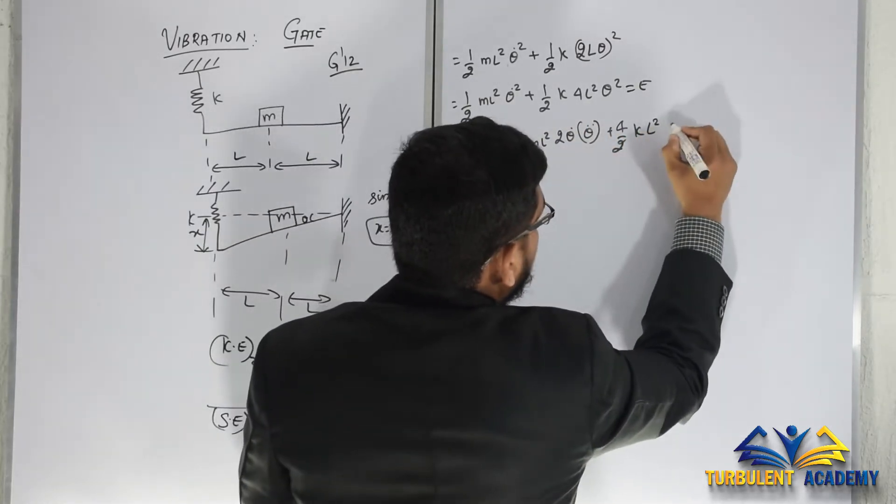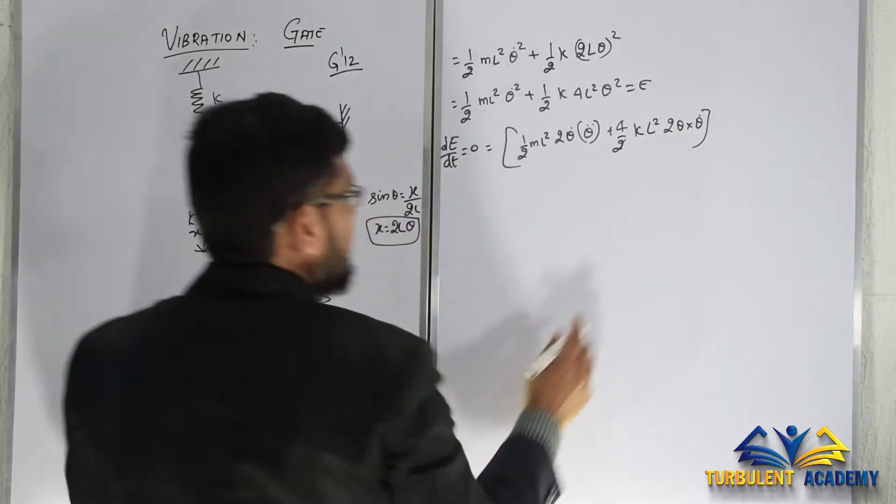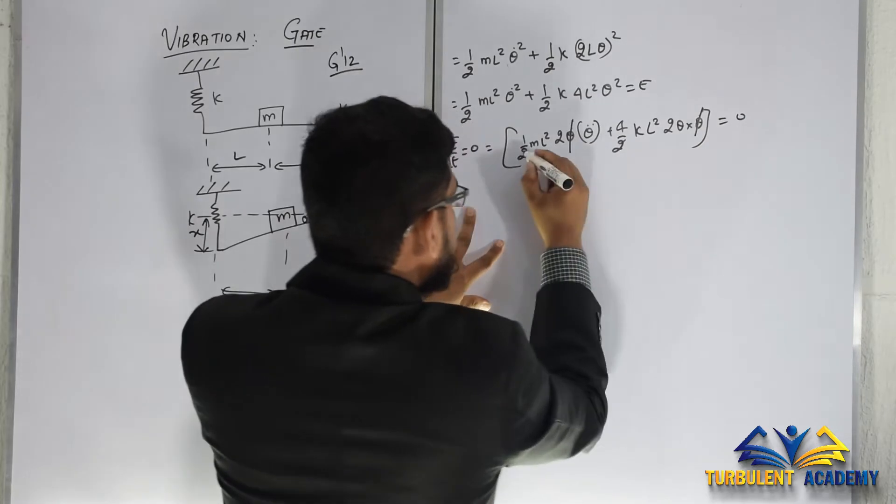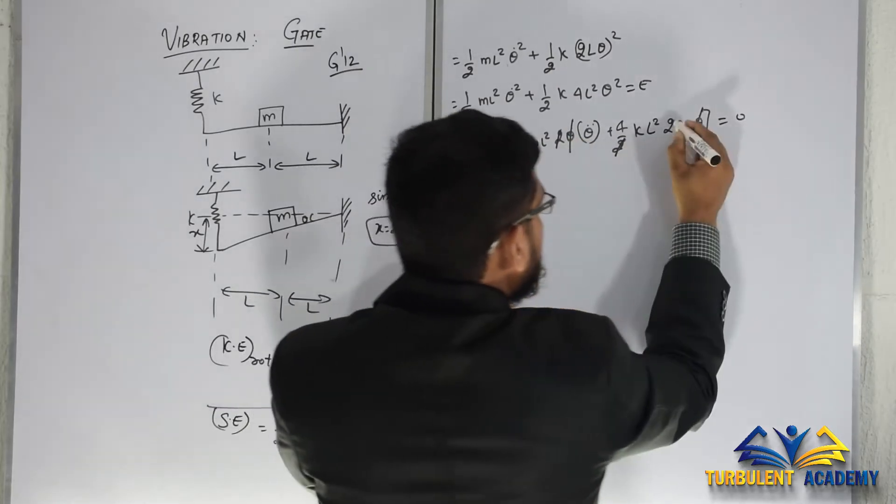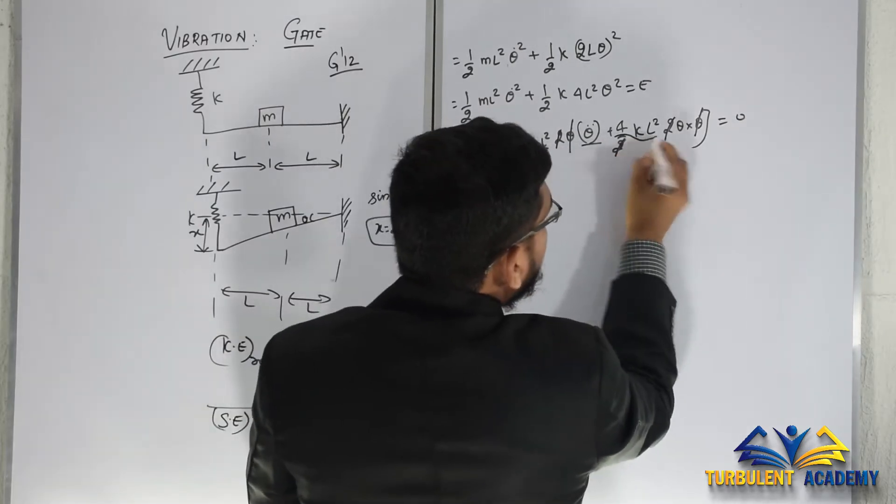Which is equal to 0. Theta dot gets cancelled, 2-2 cancels, 2-2 cancels. We have ml squared left, 4kl squared theta.